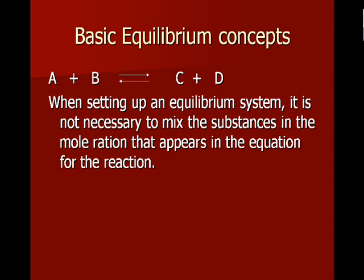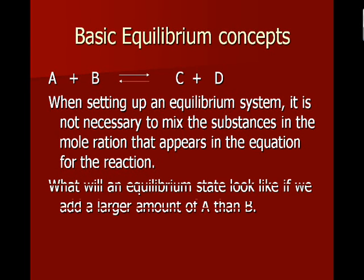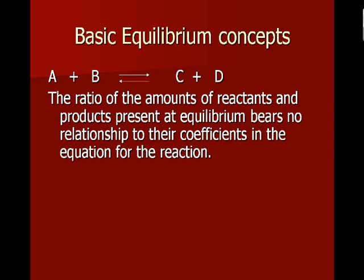The mole ratios at equilibrium are not equal. The thing that's at equilibrium when you make an equilibrium system is the forward and reverse reaction rates. What will an equilibrium state look like if we add a larger amount of A than B? The system will still come to equilibrium.